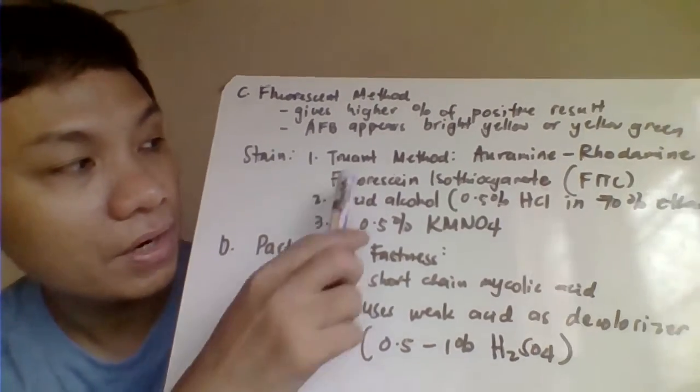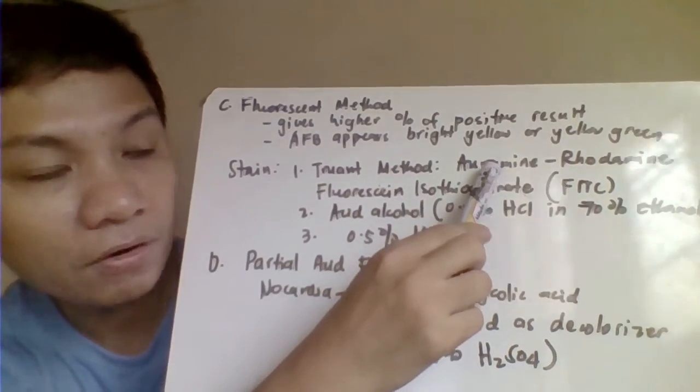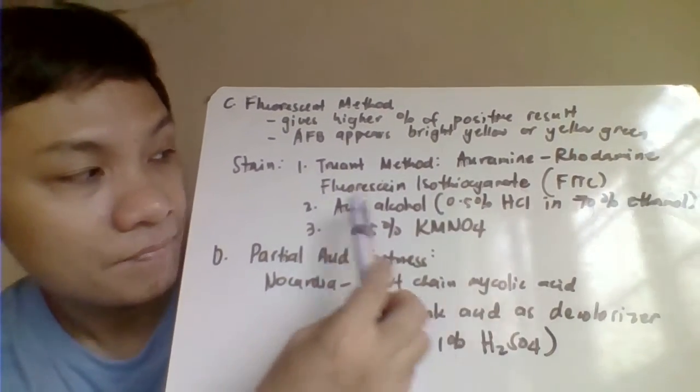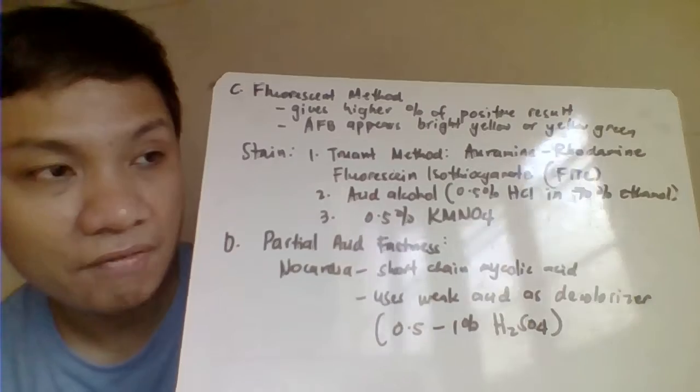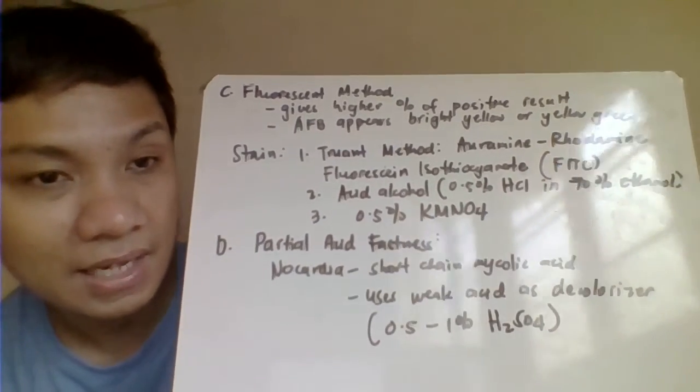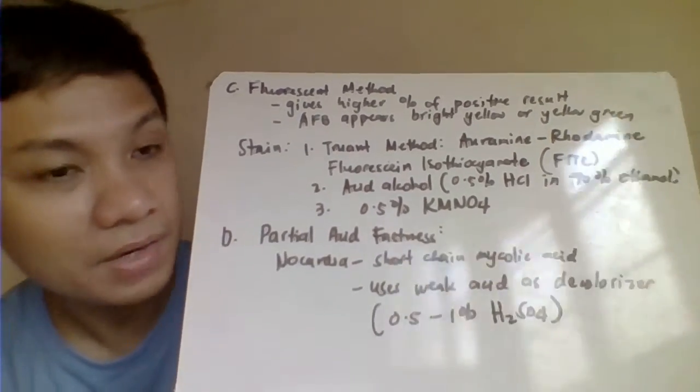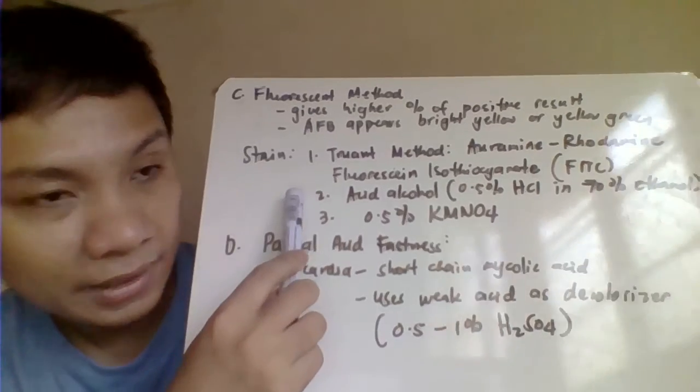So for that, we have your Truant method with the use of your auramine-rhodamine stain. And could also have here your fluorescein isothiocyanate. This is your fluorescent stain.